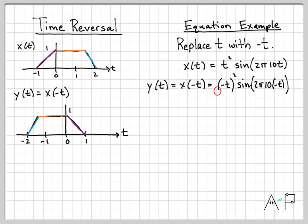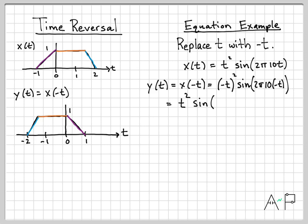If you don't need to simplify, that's a perfectly fine answer, though it's a little ugly. We'll do a bit of algebraic simplification: negative t squared, once we square it, gives positive t squared. Then we have sine of minus 2π·10t. Since sine is an odd function, sine of a negative quantity equals negative sine of the positive quantity — you can pull the negative out front. So the result is minus t squared times sine of 2π·10t. That completes the time reversal of x of t by following the simple algebraic rule of replacing t with minus t.